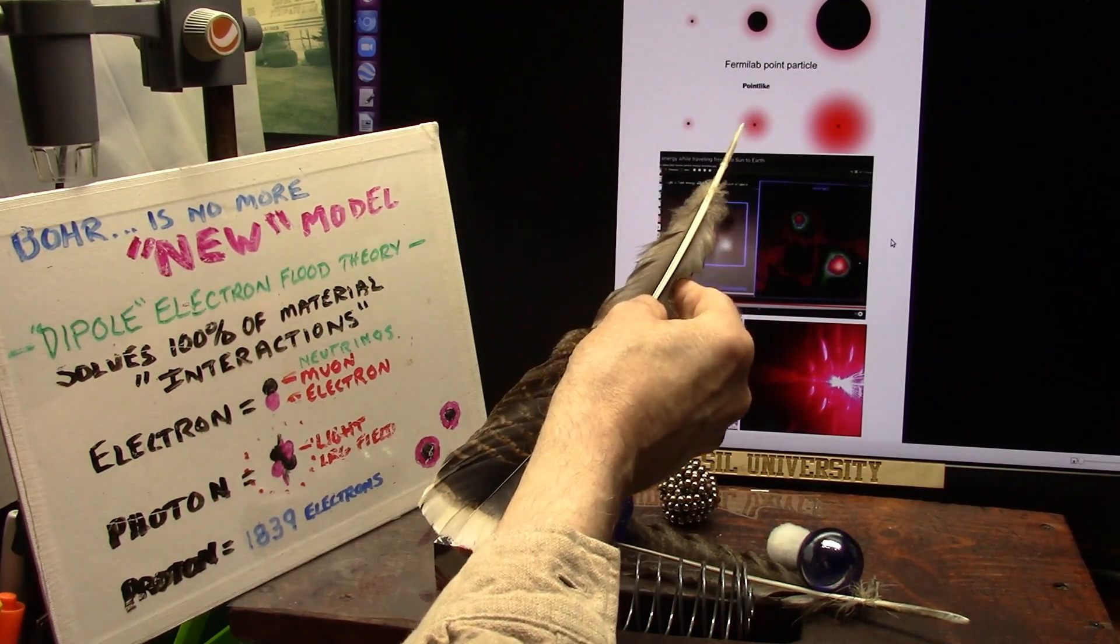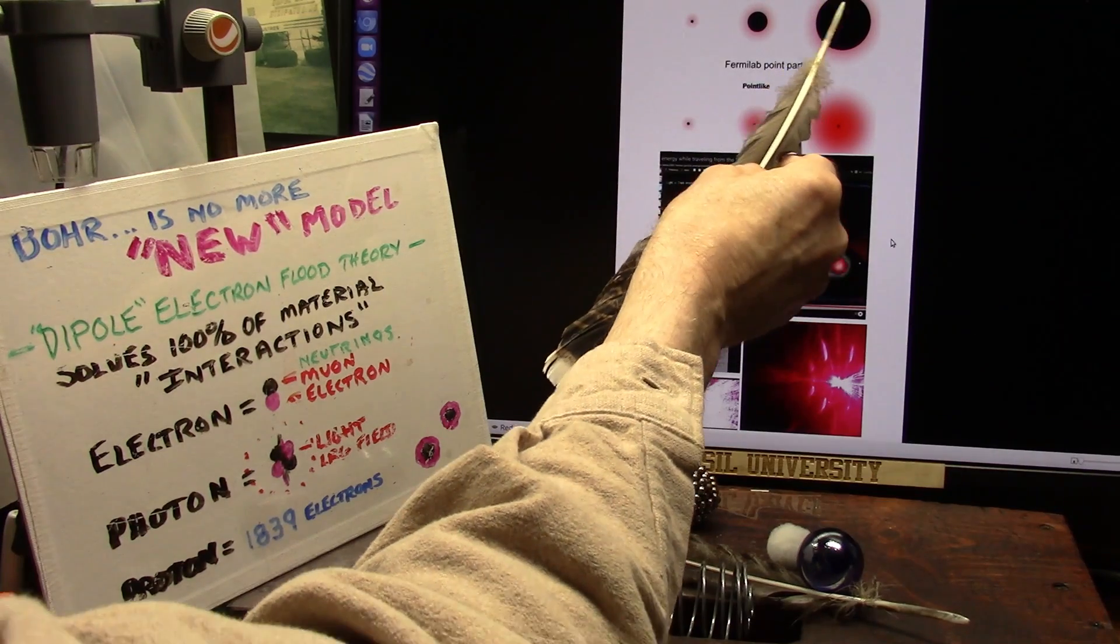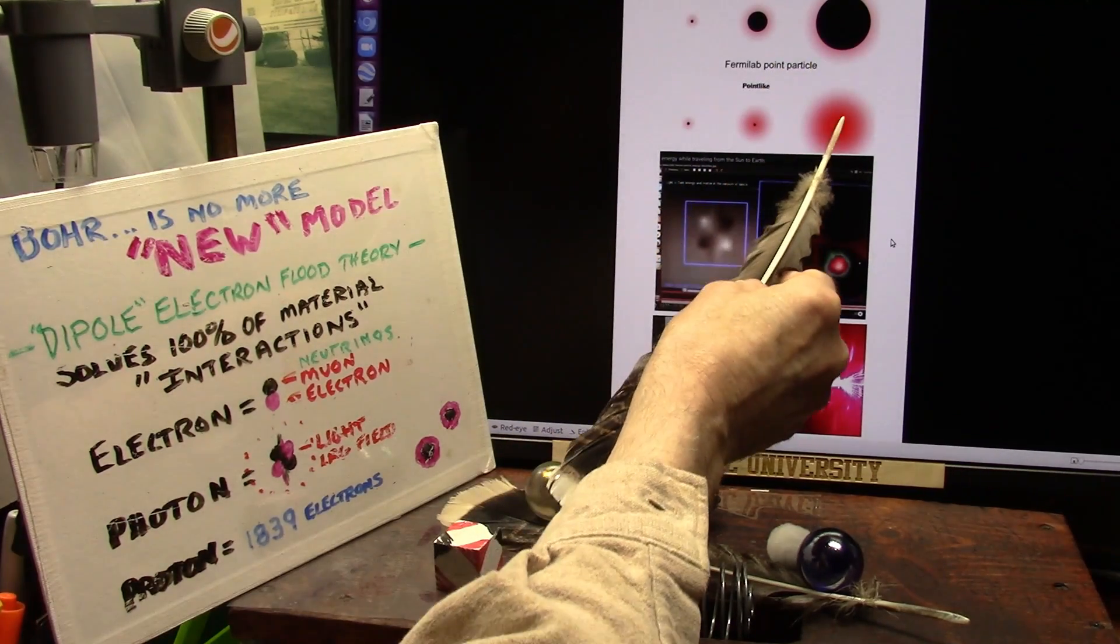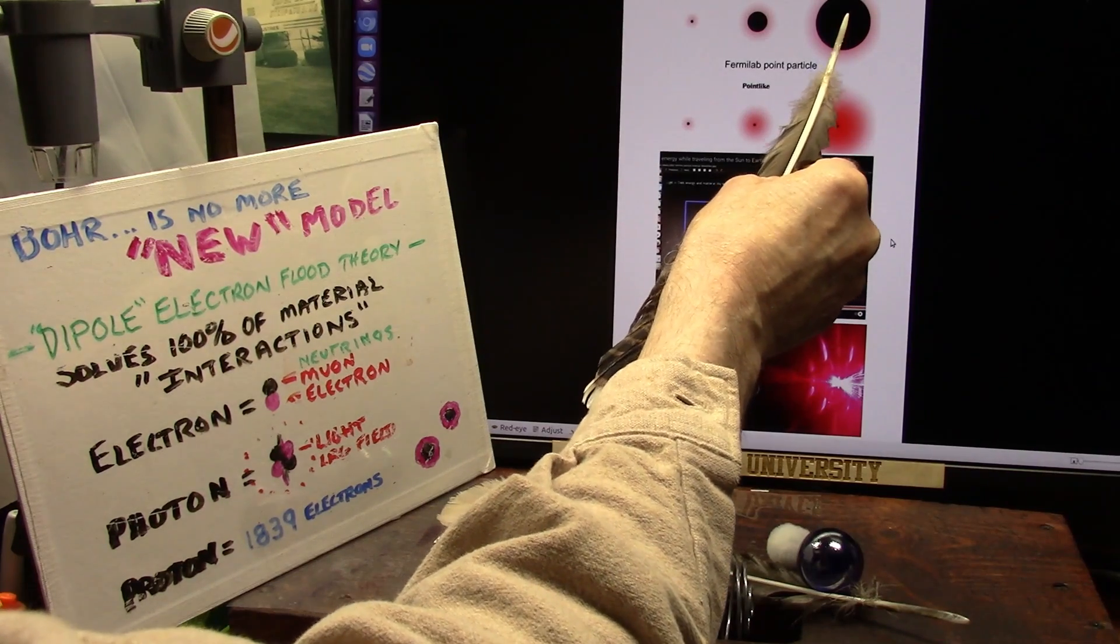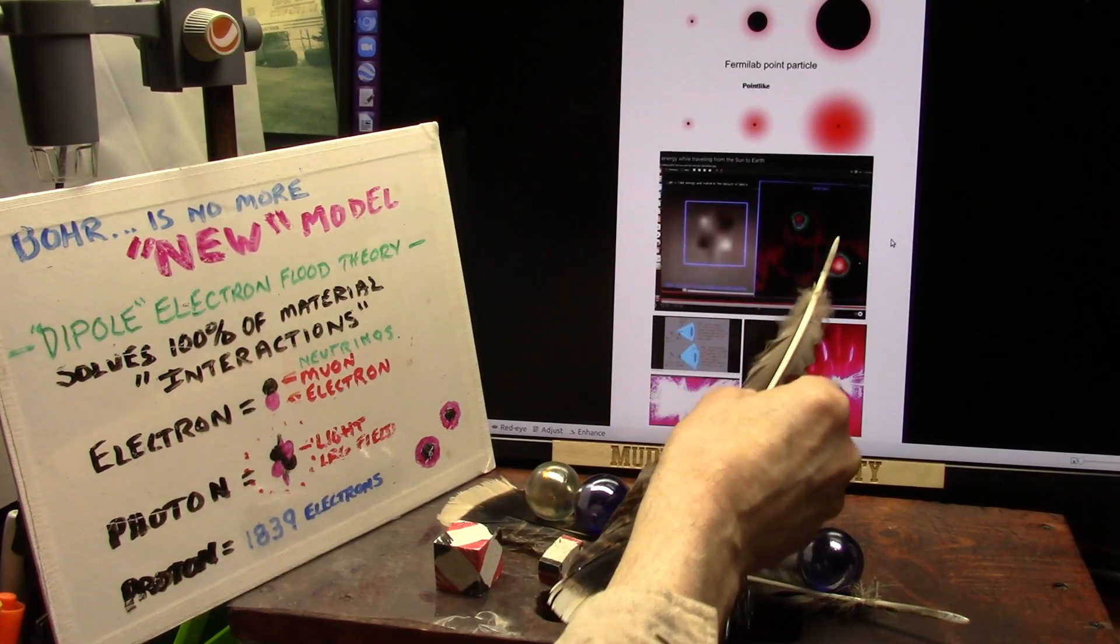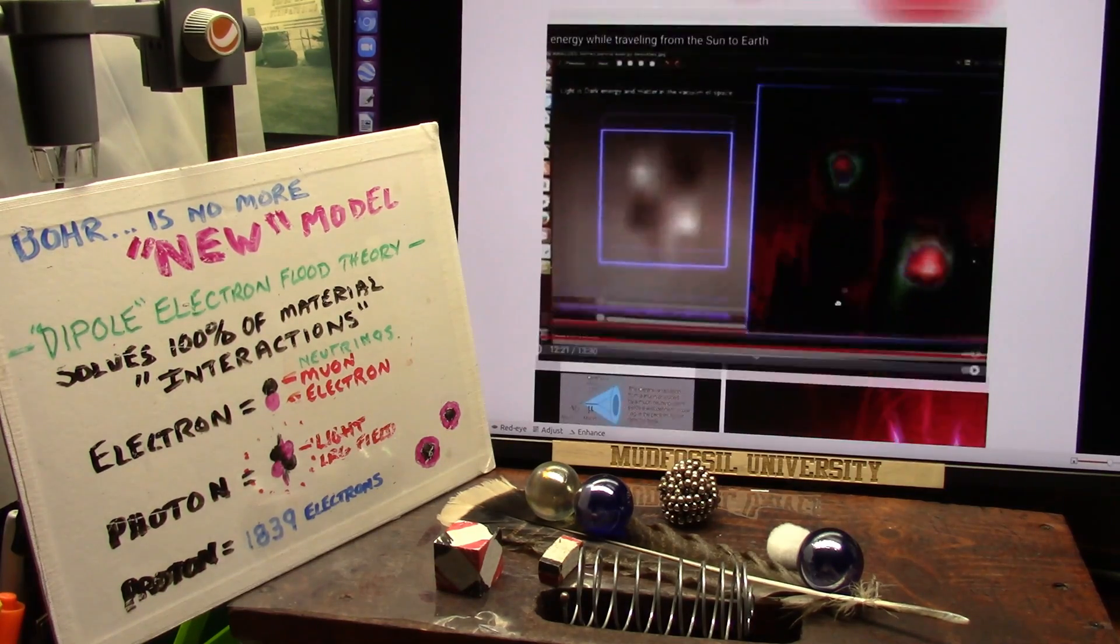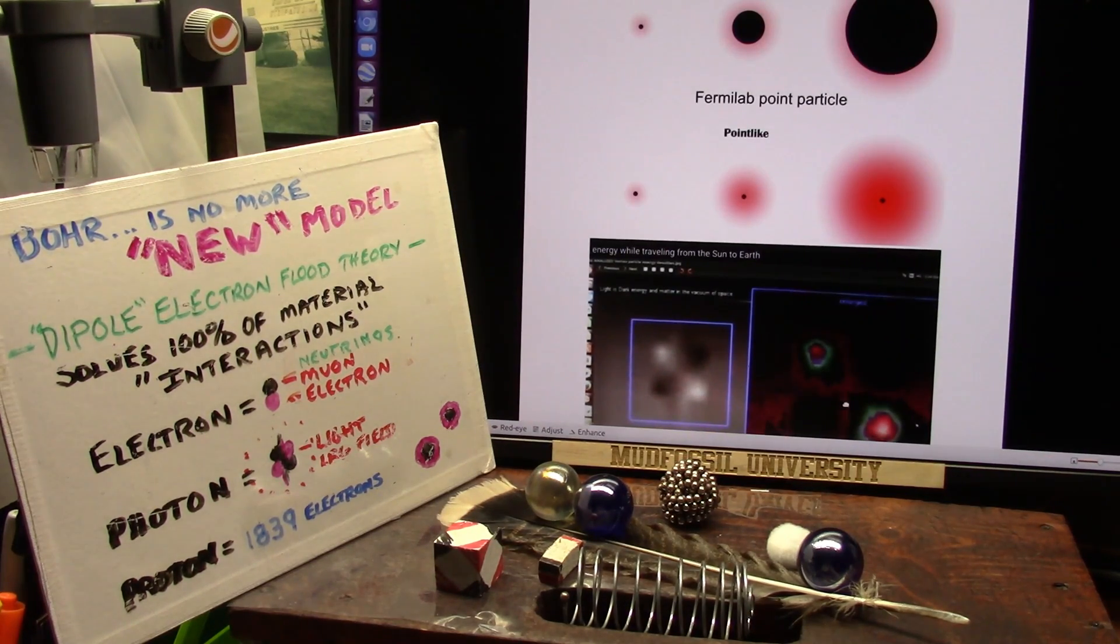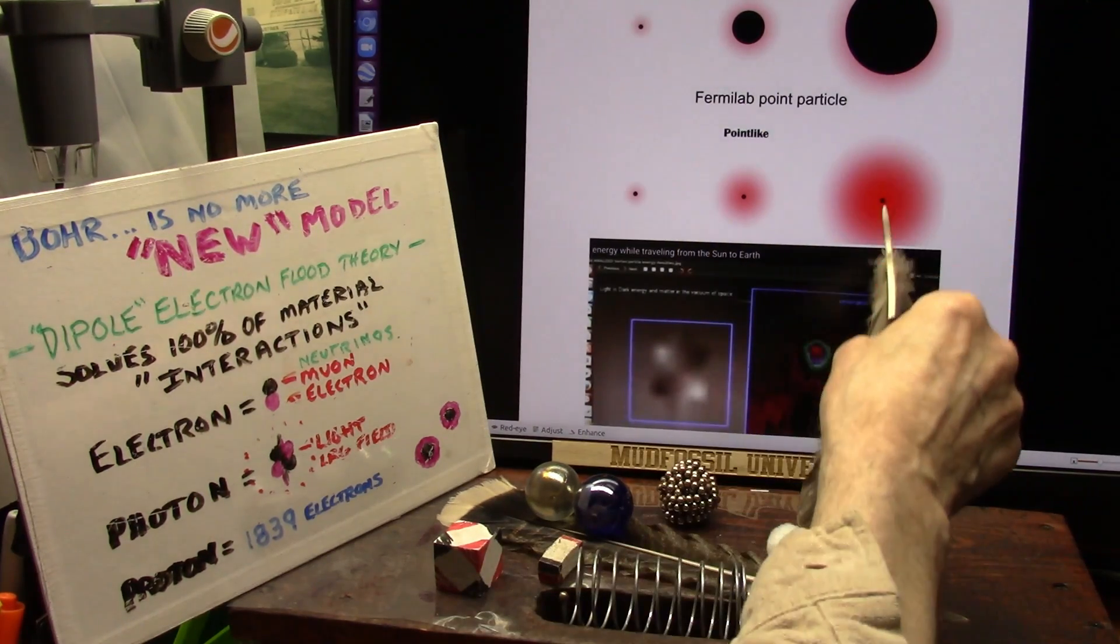Fermilab says the same thing. They say that there's a point particle and a fixed particle. That's the fixed particle, and that's the point particle. That can get big and small. That is the same size. It's fixed, and there's the fixed one right there. You see it? Now, that's from Fermilab. This is my work right here, but this is from Fermilab says these particles exist.